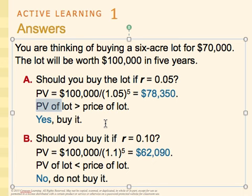In scenario B, should you buy the lot if the interest rate is 10%? The calculation: $100,000 divided by (1.1) raised to the power of 5 gives a present value of $62,090. Since the present value of the lot is less than the price of the lot, no, don't buy it — you're going to lose money in real terms. At a higher interest rate, borrowing is more expensive, and your opportunity cost is higher. In five years, you could have a greater return simply by investing the money at 10%.